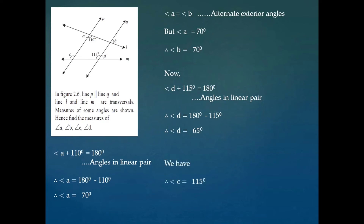Lastly, we have to find the measure of angle C, which is equal to 115 degrees, because angle C and 115 are corresponding angles, and if two lines are parallel then the corresponding angles are congruent. That is why the measure of angle C is equal to 115 degrees.